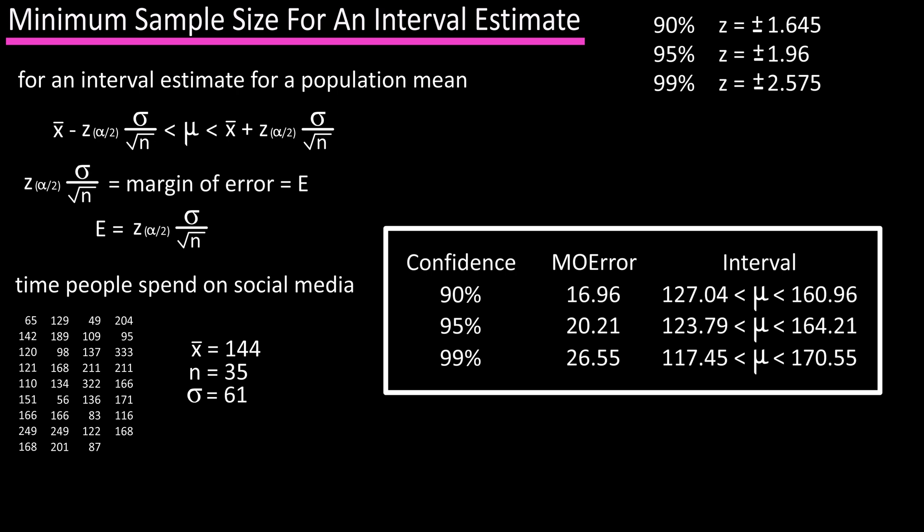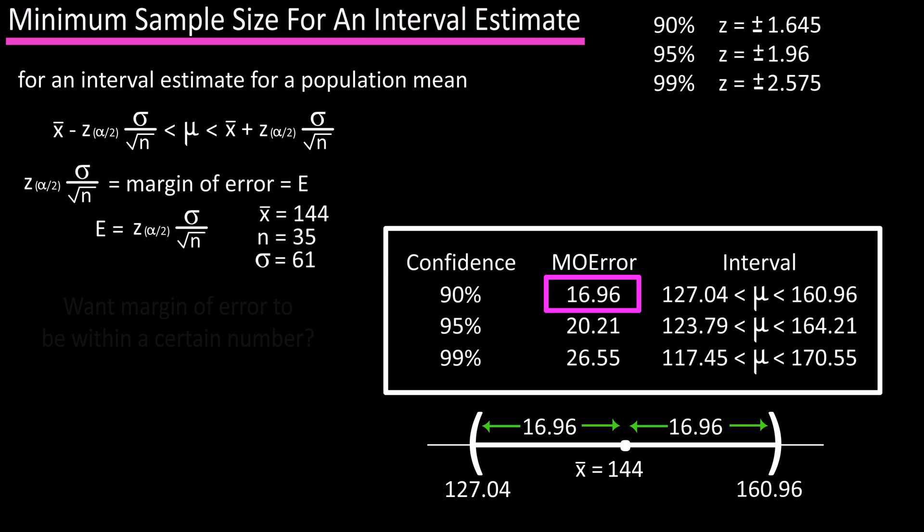So for the 90% confidence interval, the margin of error is 16.96, which is the distance from an endpoint of the interval to the center or mean. But what if we wanted the margin of error to be within a certain number?